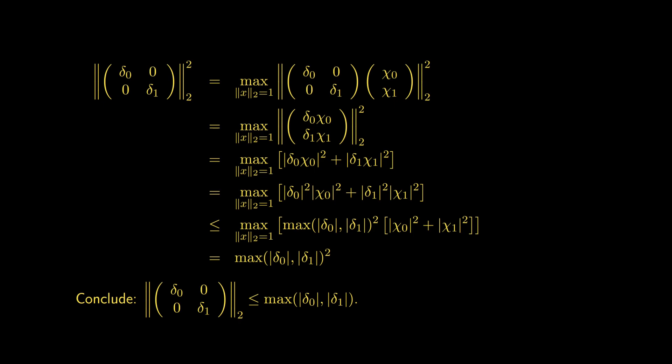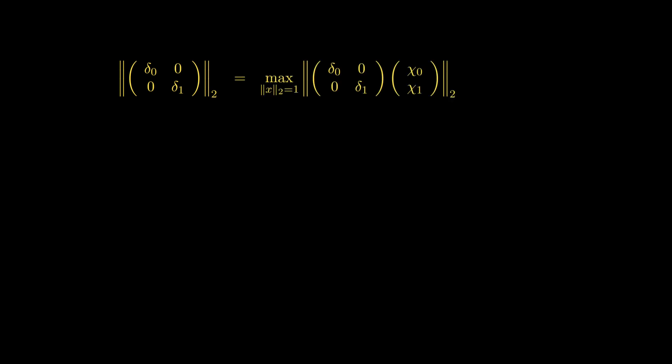That just shows it's less than or equal to — we want to show that it's equal to. So we're also going to show that it's greater than or equal to. Here is the 2-norm of the diagonal matrix; we apply the definition. If we choose a specific vector x with 2-norm equal to 1, then we know it's greater than or equal to that value. The standard basis vectors are convenient to pick.